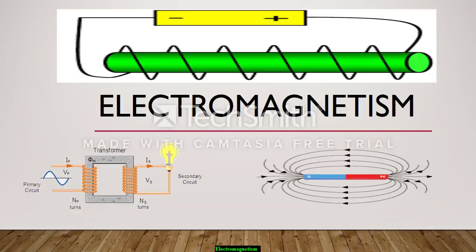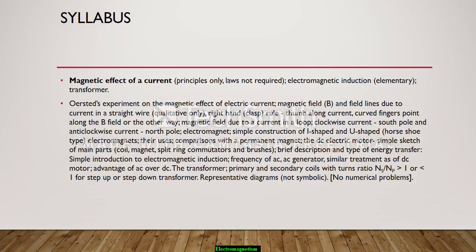Hi students, welcome back. Today I will be dealing with the toughest chapter of ICSE physics: electromagnetism. Let's start with the syllabus. The syllabus contains all these things, but today I will be dealing with Oersted's experiment on magnetic effect of electric current.